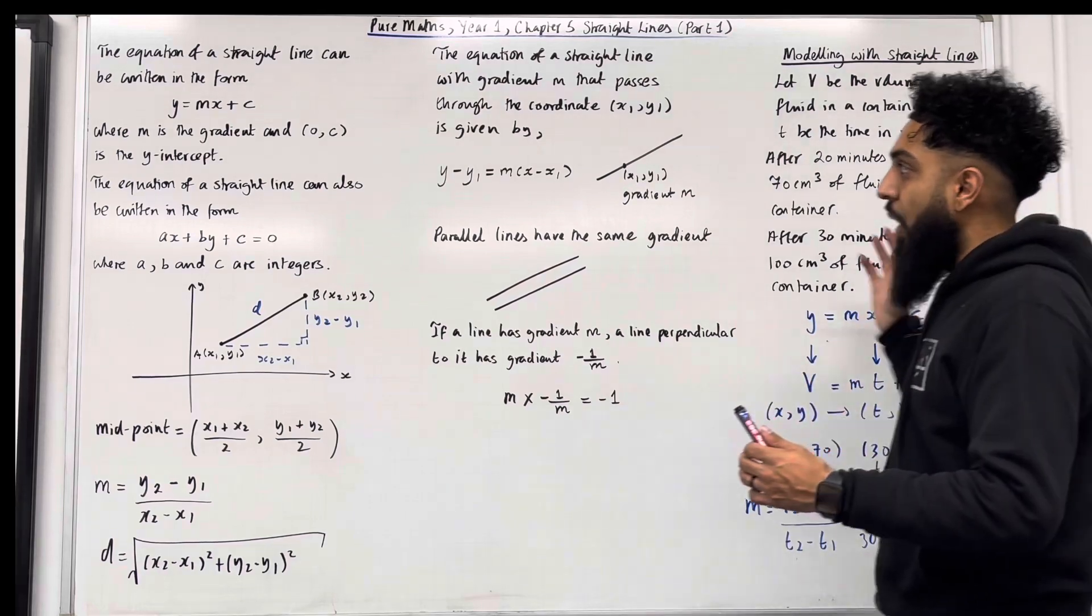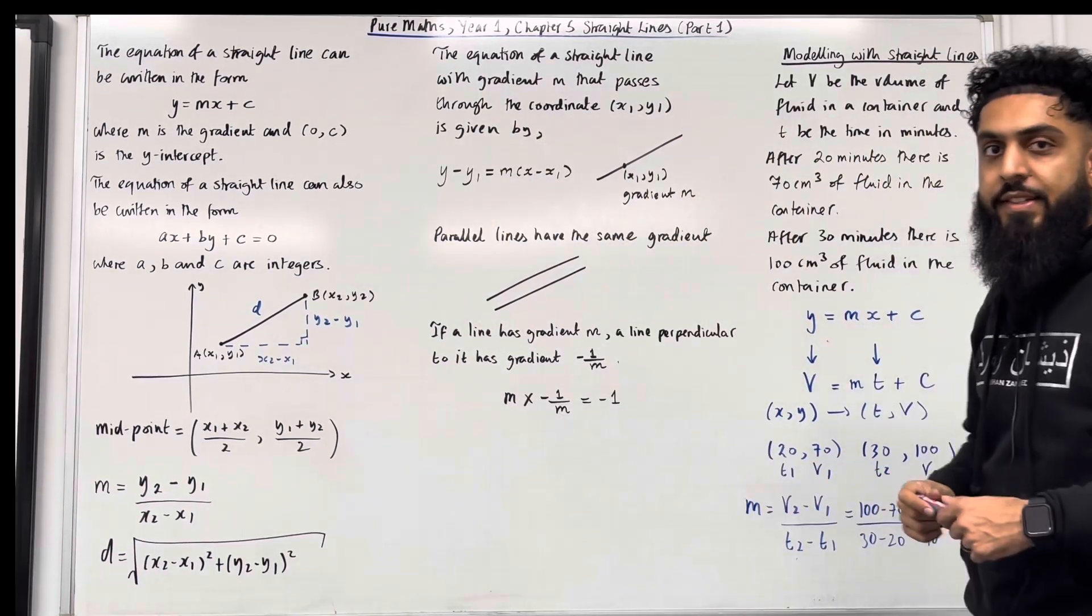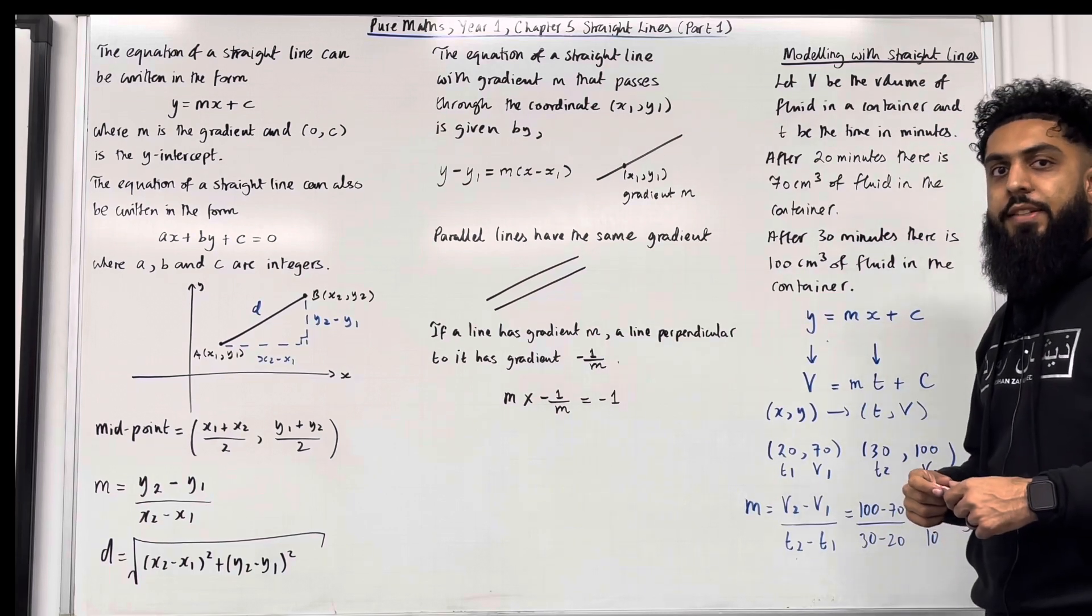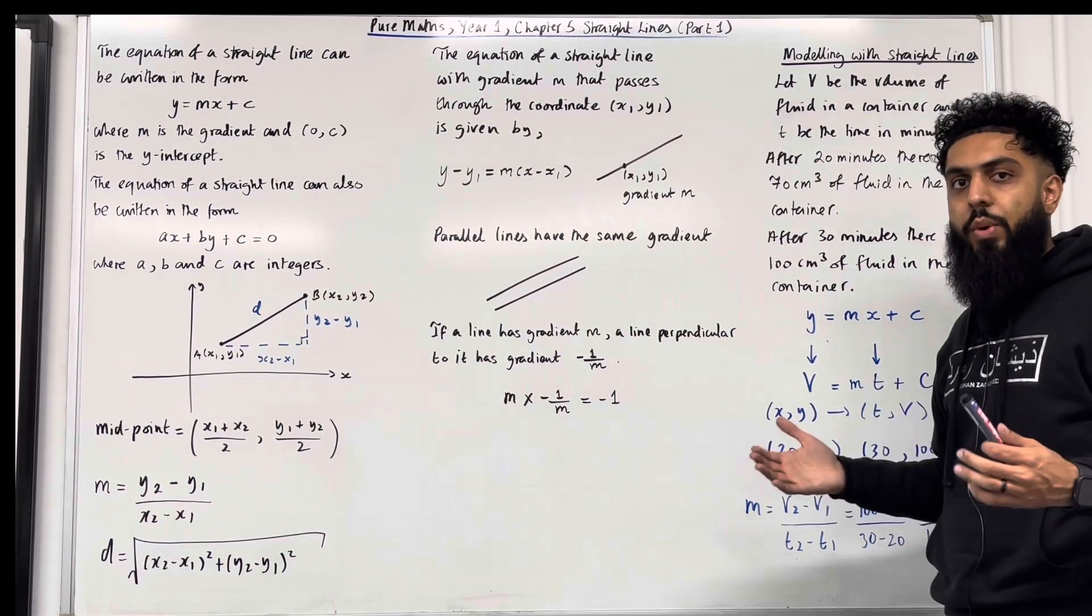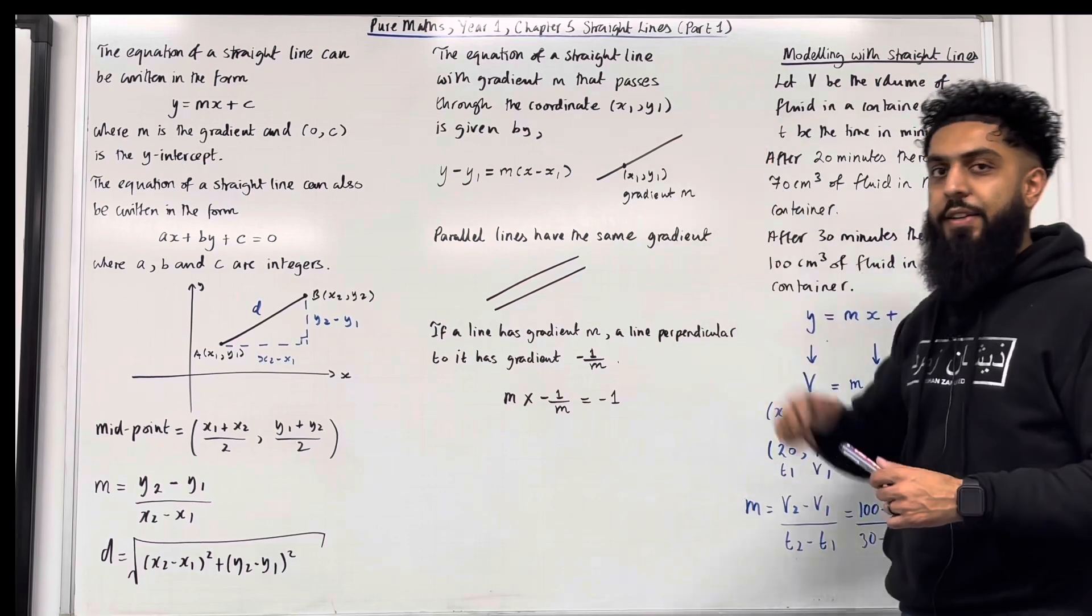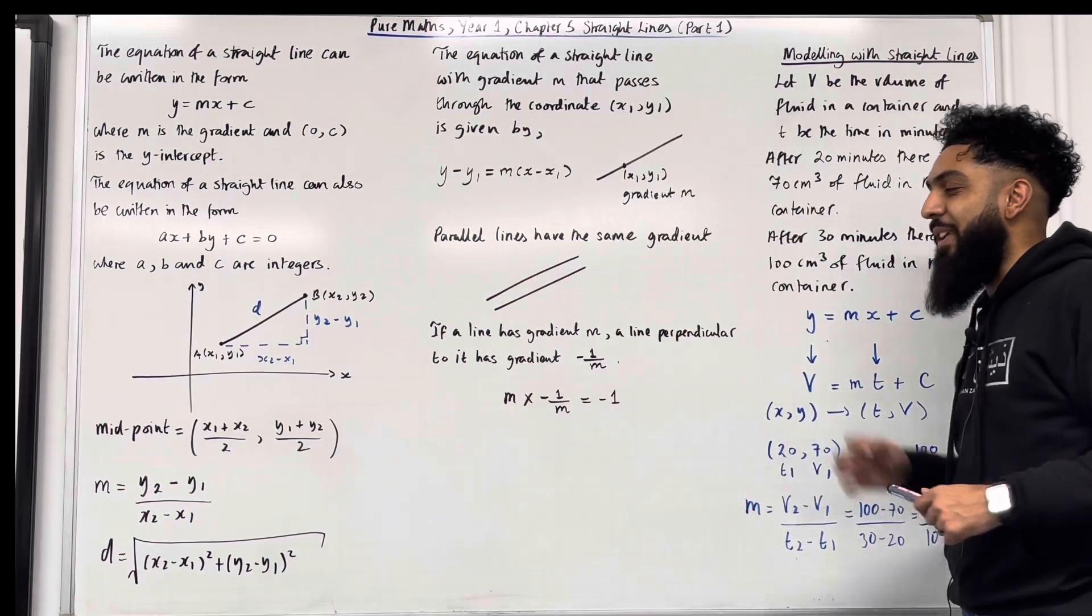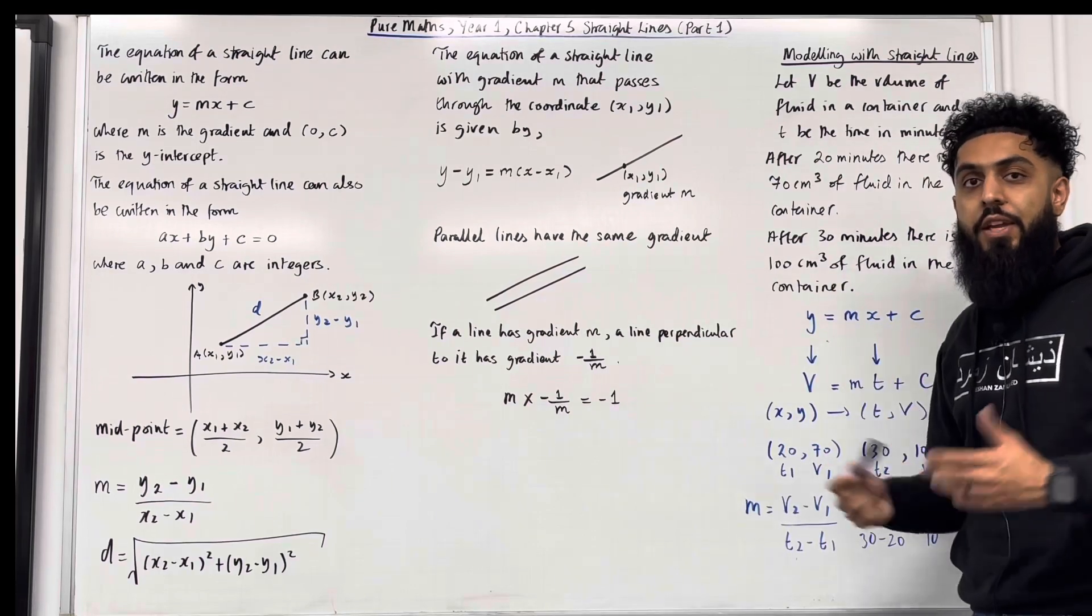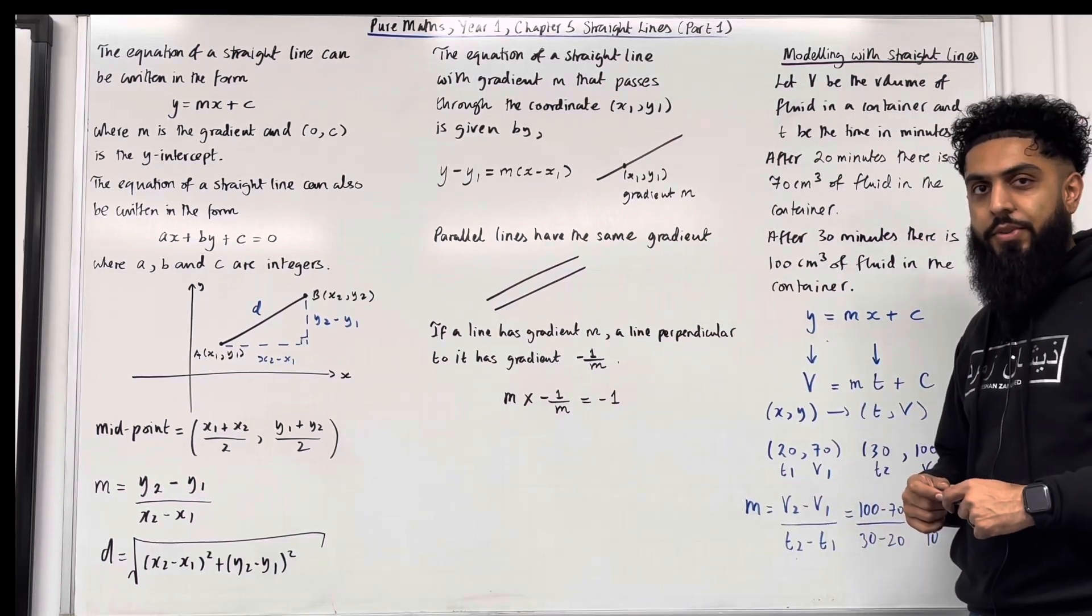And ladies and gents, these are all the key facts that you need to know for chapter 5 straight lines in the Pearson A level maths pure maths year 1 textbook. Now in the next part of the video, I'm going to go through exam style questions covering straight lines. If you found this video useful, please don't forget to subscribe, leave a like, leave a comment, turn on the notification bell so that you receive notifications every time I post teaching videos. We'll see you next time.